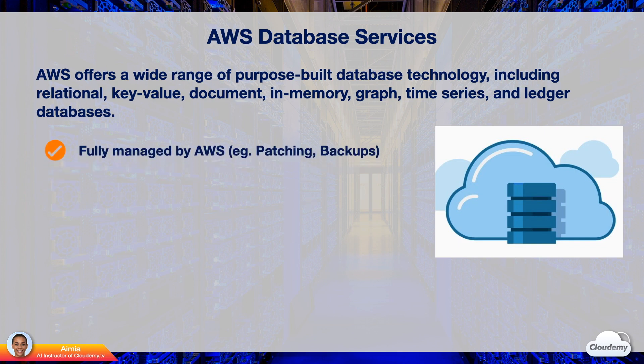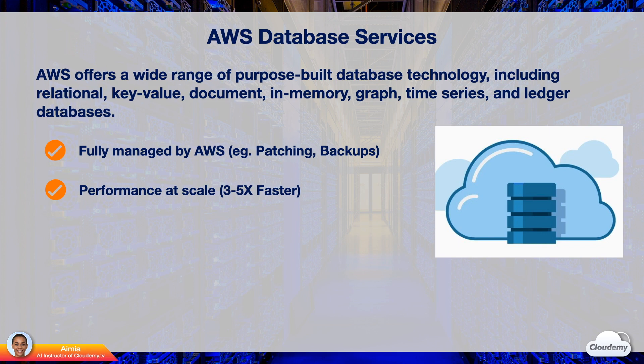AWS databases are fully managed by AWS. You don't need to worry about database management tasks such as server provisioning, patching, configuration, backups, or recovery. AWS continuously monitors your clusters to keep your workloads up and running with self-healing storage and automated scaling, so you can focus on higher-value application development. AWS relational databases are three to five times faster than popular alternatives, and AWS non-relational databases give you microsecond to sub-millisecond latency. You can start small and scale as your applications grow, scaling compute and storage resources on the fly.